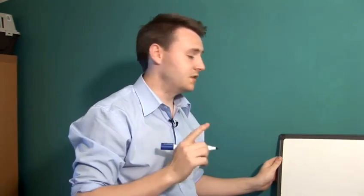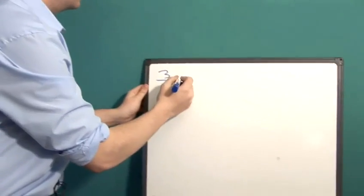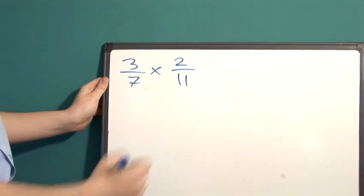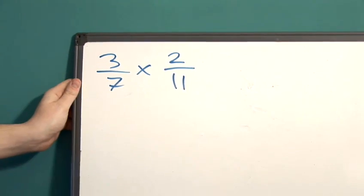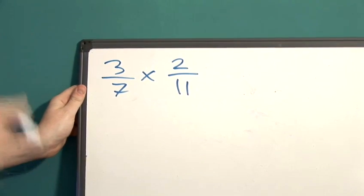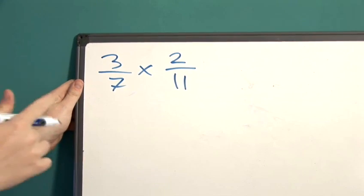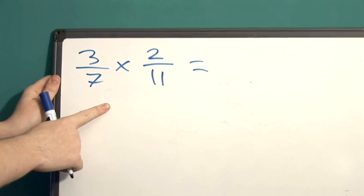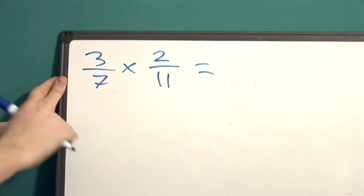Let's say you want to multiply two fractions together like three sevenths and two elevenths. At first this looks quite complicated but actually multiplying fractions is really easy. All you have to remember is that you multiply the numerator and the denominator separately.